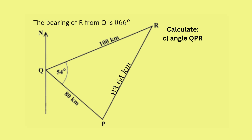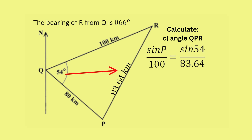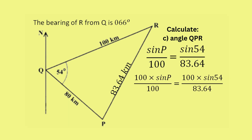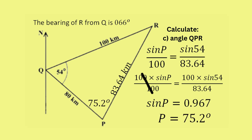In part c we have enough information to use either rule, so we use the sine rule. Since we are finding an angle, we use the formula with angles in the numerator: sine P over its opposite side 100 equals sine 54 degrees over its opposite side 83.64. Multiplying both sides by 100 gives sine P equals 0.967. Pressing shift, then sine, then 0.967, gives angle P equals 75.2 degrees.